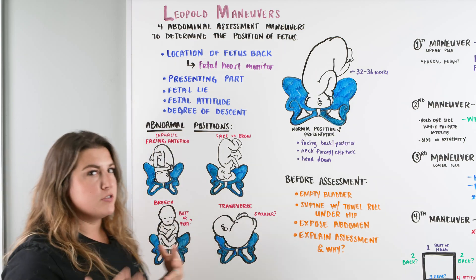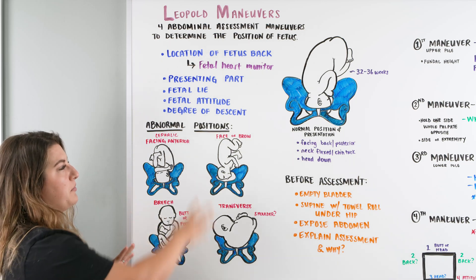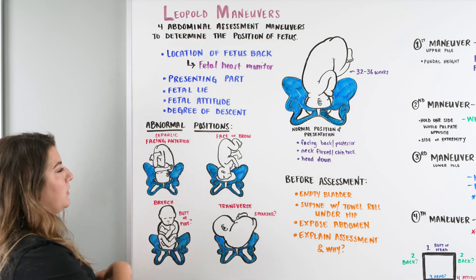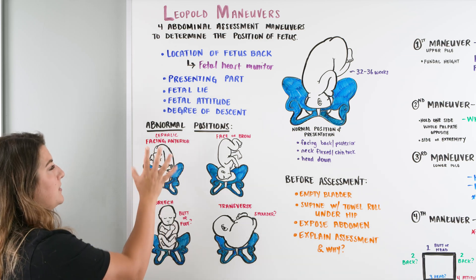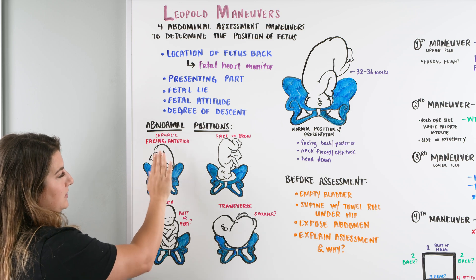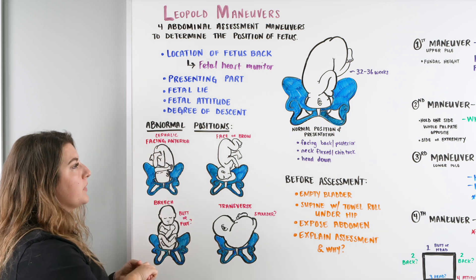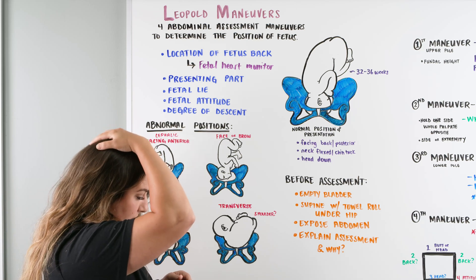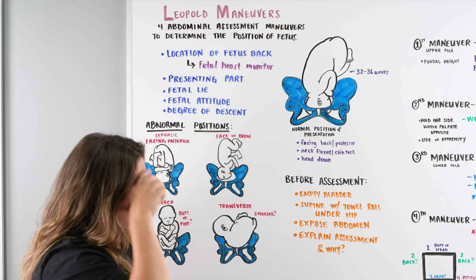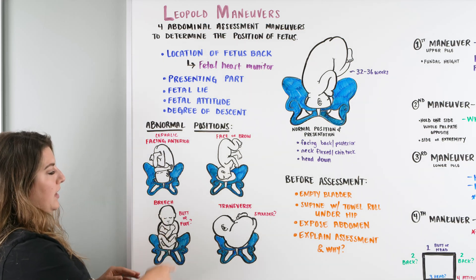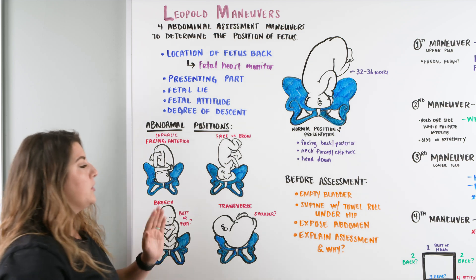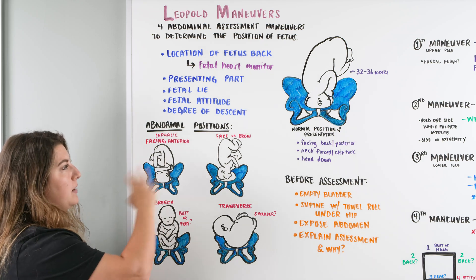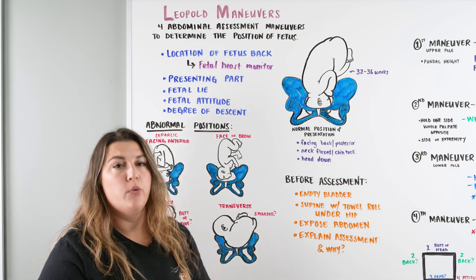There are lots of abnormal positions that baby can be in, and we need to be able to understand what those different positions are so that when we do the maneuvers we can identify them. There can be cephalic facing anterior — so instead of baby facing to mom's back, they are facing forward. Or they can be face or brow down, meaning instead of seeing the occiput, we're looking at the face or eyebrow. There could also be breech, where we're looking at the butt or foot. And then transverse, where the hand or shoulder is presenting.